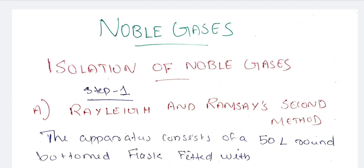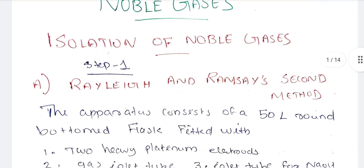Isolation of noble gases. The isolation of noble gases involves two steps. The second step is Rayleigh and Ramsay's method.